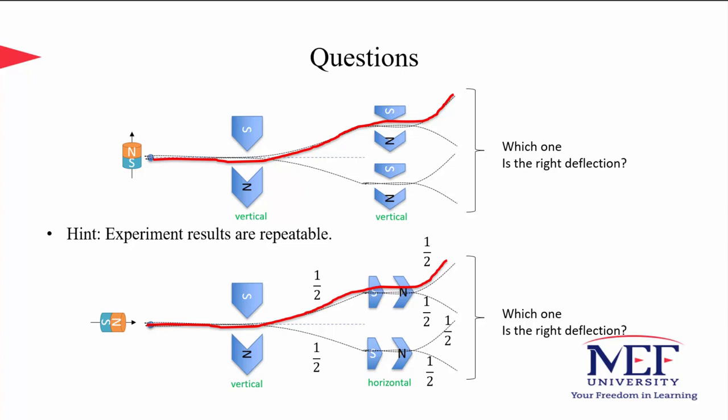The bottom case is more counterintuitive. The magnetization direction of the particle and the apparatus are perpendicular, so the deflection direction is probabilistic. It turns out the particle is deflected up with half probability and down with half probability. Once the deflection direction is chosen, the particle's magnetization direction aligns with the apparatus's magnetization direction. In that case, the second apparatus again becomes perpendicular to the particle's magnetization direction, so the particle again deflects either up or down with half probability each. Therefore, all four possible destinations occur with quarter probability. Each of these possibilities happens with equal probability.